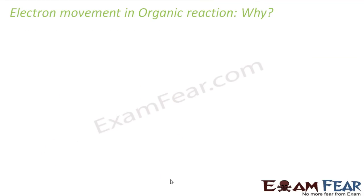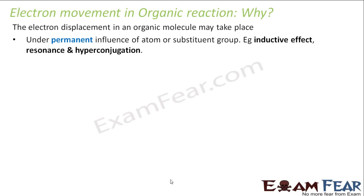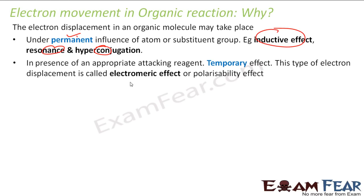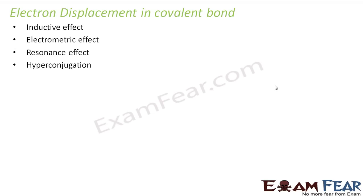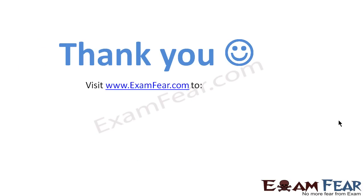The next question that should come to our mind is: why do electrons move? There are several reasons — some are permanent effects and some are temporary effects. The permanent effects include the inductive effect, resonance, and hyperconjugation. The temporary effect is the electromeric effect. We will talk about inductive effect, electromeric effect, resonance effect, and hyperconjugation.